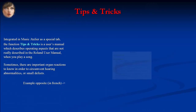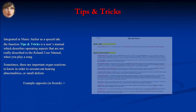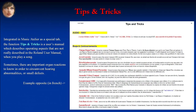Integrated in Music Atelier as a special tab, the Tips and Tricks function is a user's manual describing operating aspects not really described in the Roland user manual when you play a song. Sometimes there are important organ reactions to know in order to circumvent hearing abnormalities or small defects. The example shown is in French.